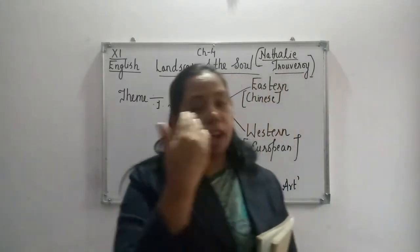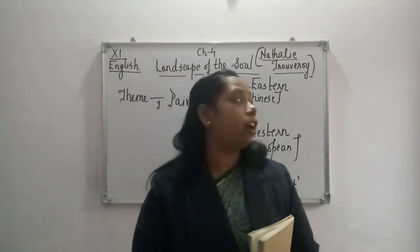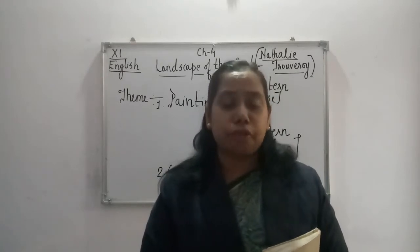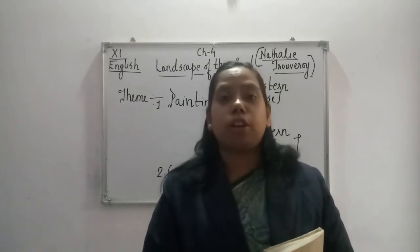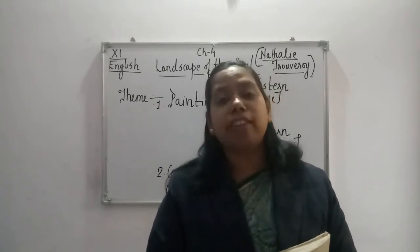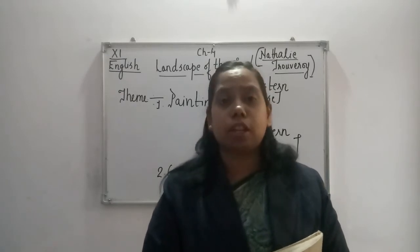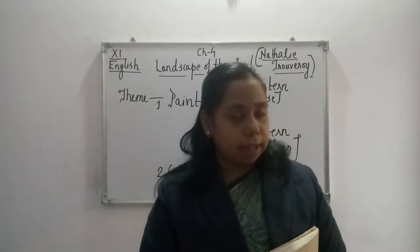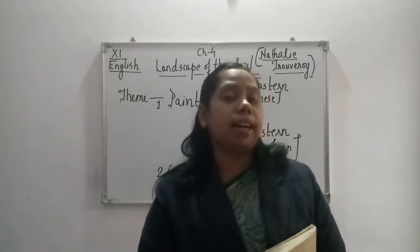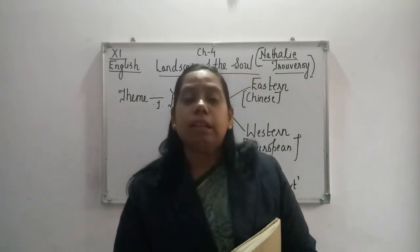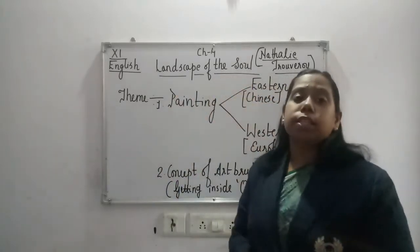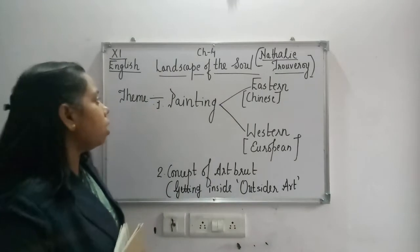Our author Nathalie Trouveroy is an art historian who has traveled to different places. She is from Belgium, one of the European countries, and came into the limelight when she translated a work called City of Djinns by William Dalrymple. She has an M.A. in History and Archaeology, and speaks about the landscape of the soul.